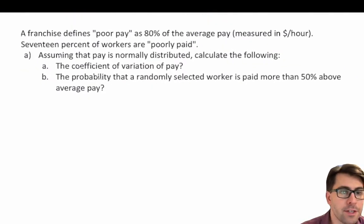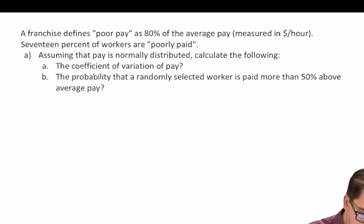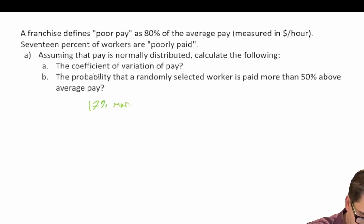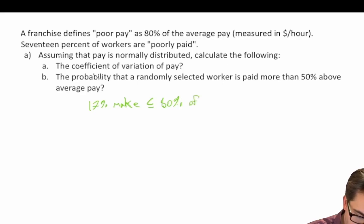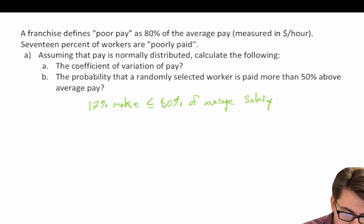Here's our practice problem. A franchise defines poor pay as 80 percent of the average pay measured in dollars per hour, and we're told that 17 percent of workers are poorly paid. So we know that 17 percent make less than or equal to 80 percent of the average salary. We're told to assume that pay is normally distributed and calculate the following.